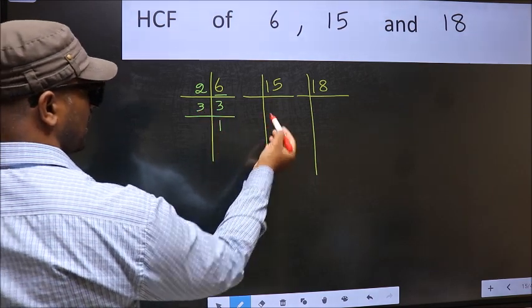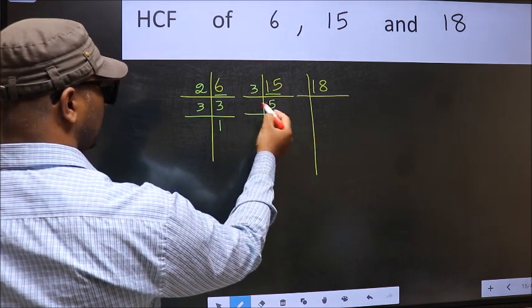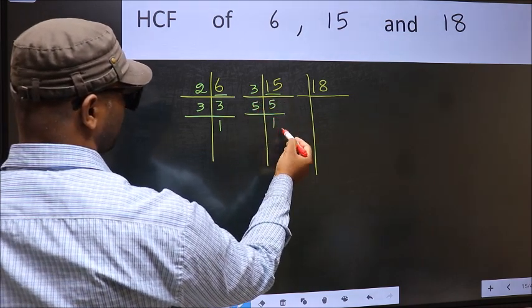Now the other number. 15 is 3, 5 is 15. Now 5 is the prime number, so 5 once 5.